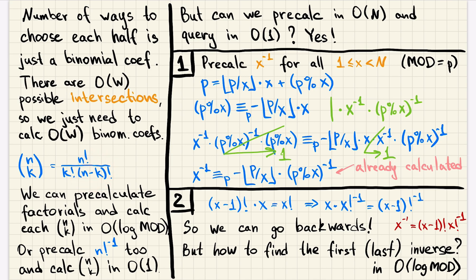We can also pre-calculate inverses of factorials. And then we will be able to calculate binomial coefficients in constant time. But then the pre-calculation is n inverses, which is n log mod. Can we get the best of both worlds? Can we do pre-calculation in linear time and query in constant time?